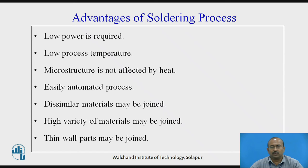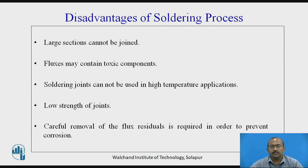Some of the advantages of soldering process: low power is required, low process temperature, microscopic microstructure is not affected by heat, easily automated process, dissimilar materials may be joined together which is not easily possible with other welding processes, high variety of materials may be joined, and thin wall parts may be joined easily. Some of the disadvantages: large sections cannot be joined, fluxes may contain toxic components, it delivers low joint strength compared to welding, and careful removal of flux residual is required in order to prevent corrosion.